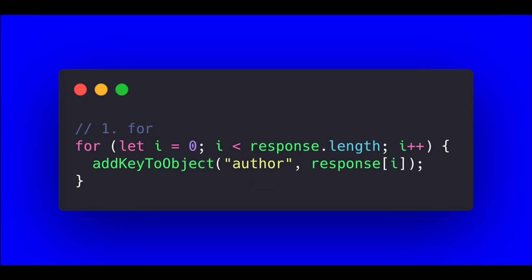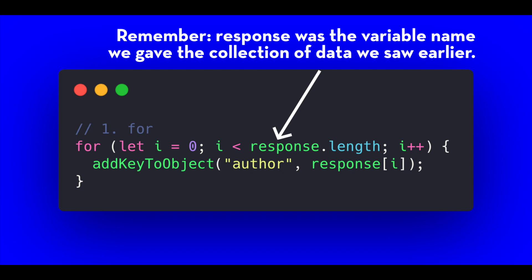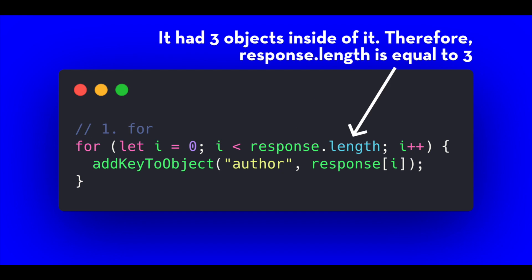The first type of loop we're going to look at is a for loop — the one you probably learned as soon as you started learning JavaScript or programming. We can look at a for loop as having three parameters: the first is a variable, the second is a condition, and the third is some change we're going to make before looping through again. In our case, every time i is less than the length of the response, we execute the addKeyToObject function. That is our for loop.